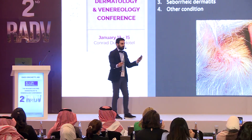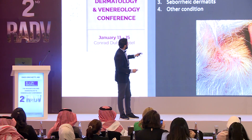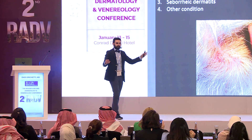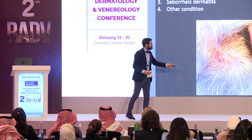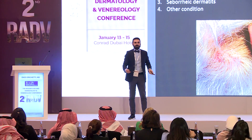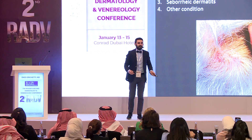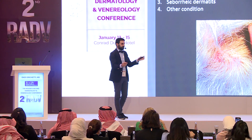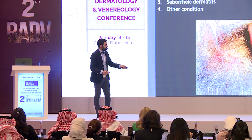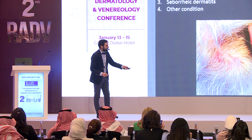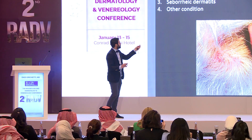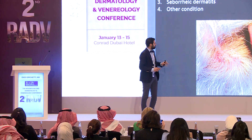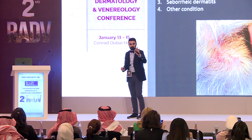Case exercise: three options plus other condition. What do you think? We have plugs — so discoid lupus. It's clear-cut: we have follicular plugs. We do not see follicular plugs in psoriasis or seborrheic dermatitis. This is discoid lupus — correct.